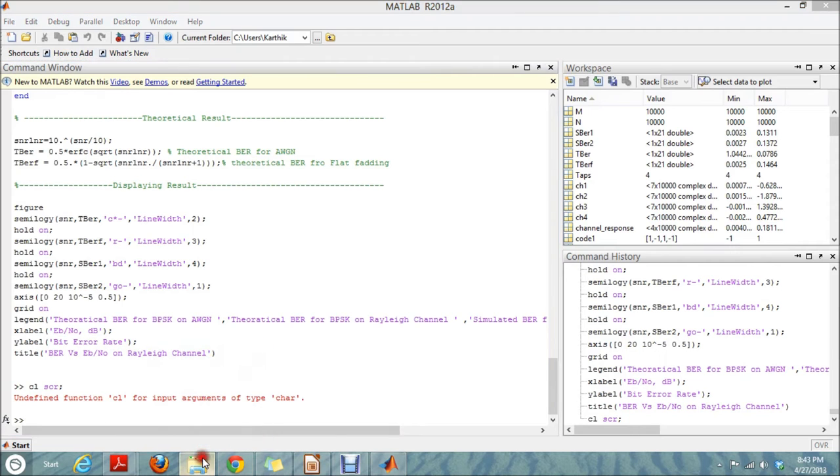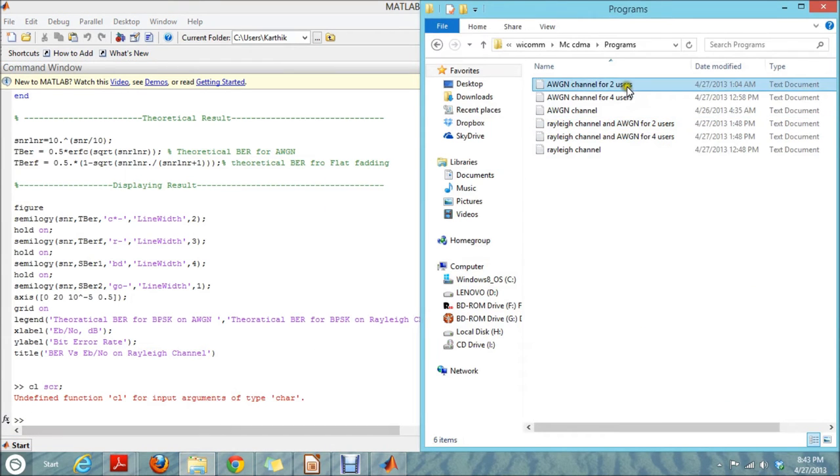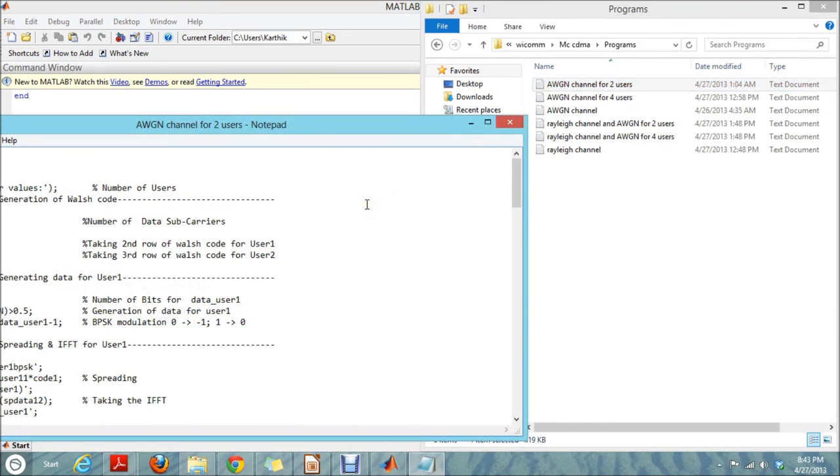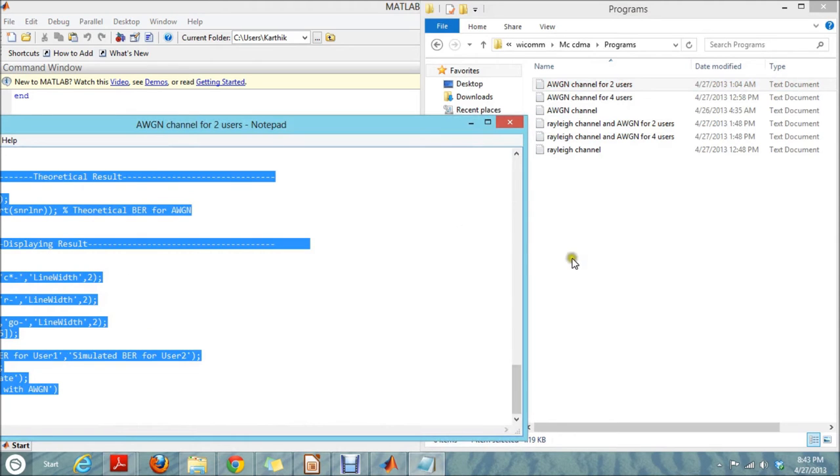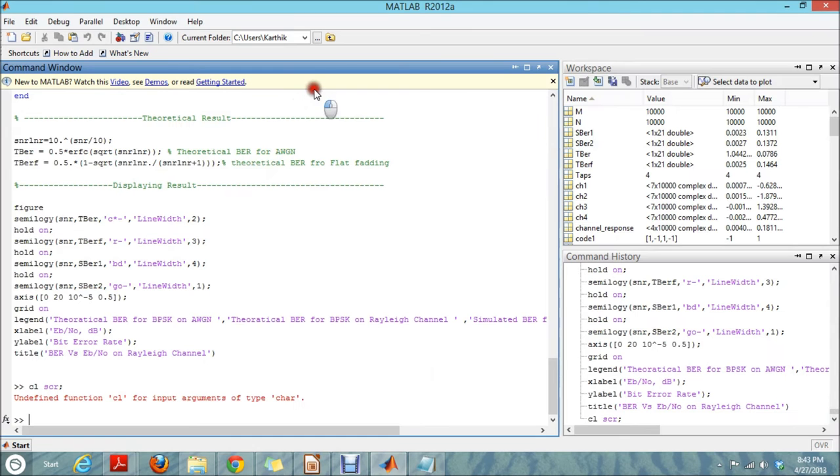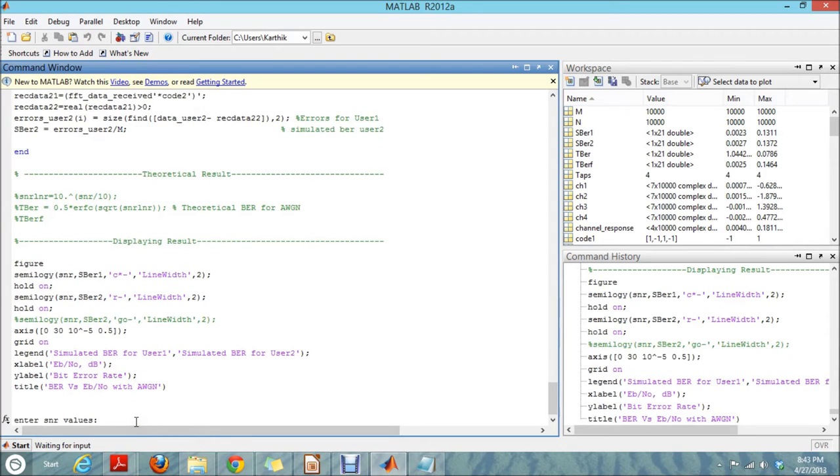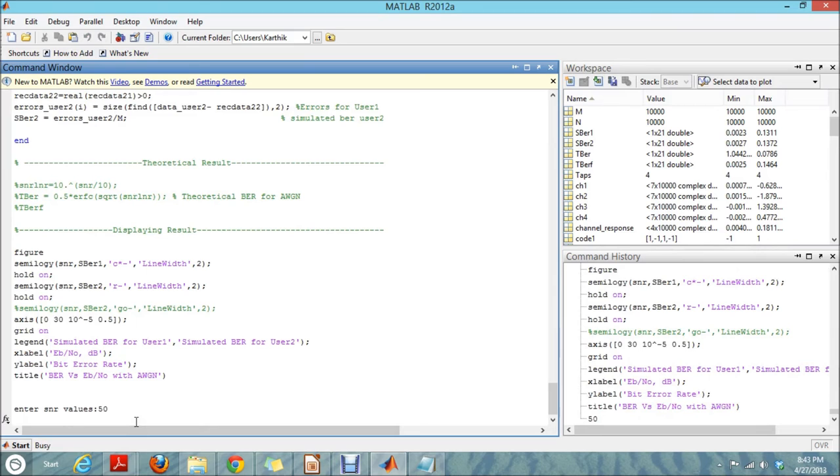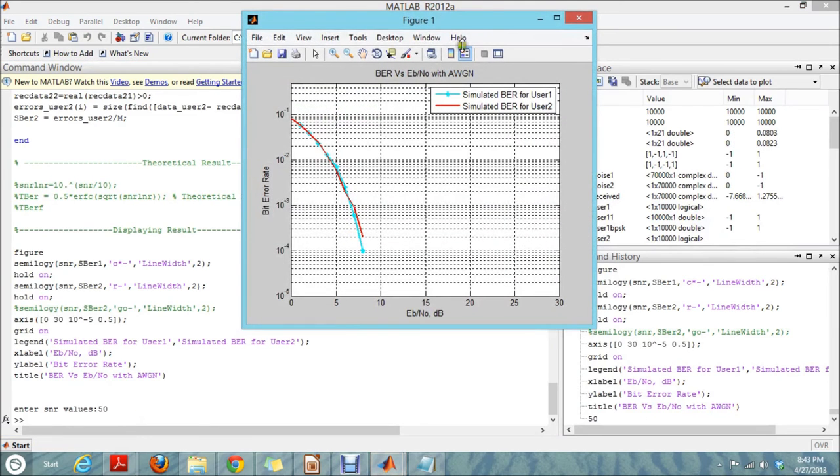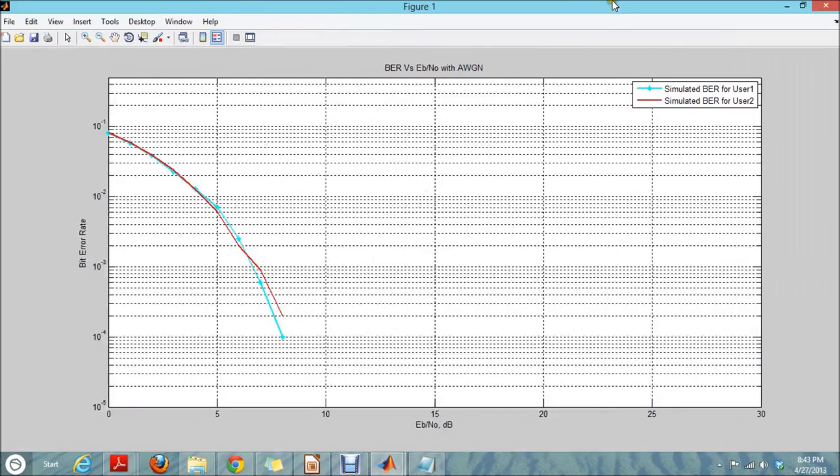So when I run this program, it asks for similar values. I will typically give it as around 50. So this is the output we get, where both user 1 and user 2 have bit rates which are going down as the Eb/N0 values increase.